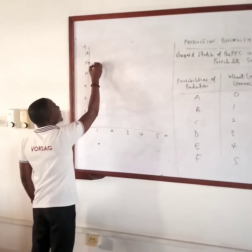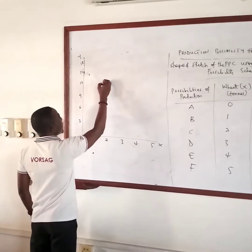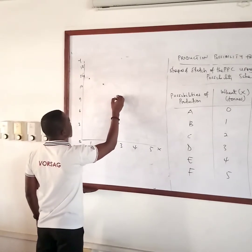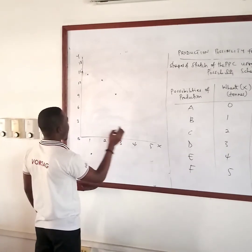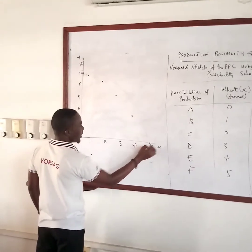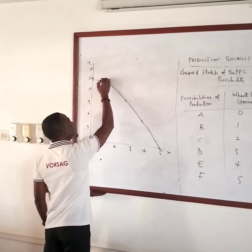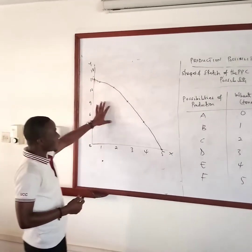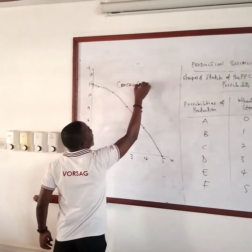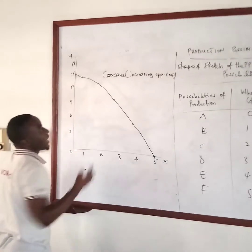Then we have one and fourteen, which goes somewhere here; two and twelve somewhere here; three and nine traced and dropped; four and five traced and dropped; and finally five and zero plotted here. Looking at these points, I join them to get my PPF. When you look at this curve, it is concave — and as earlier stated, a concave curve shows an increasing opportunity cost.